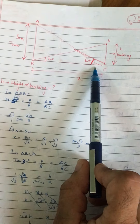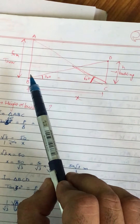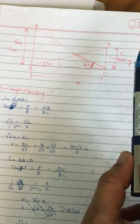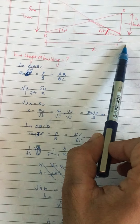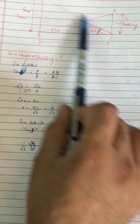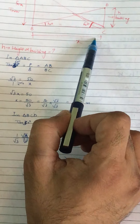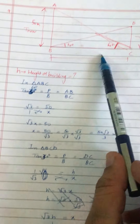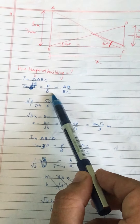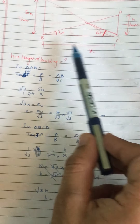Tower bada hai — because the angle of elevation of the top of the tower from the building's foot is 60 degrees, and the top of the building from the tower's foot is 30 degrees. So the tower is bigger. We have not assumed the height of the building yet; I have taken small x as BC. In triangle ABC, we will put tan60° which is perpendicular upon base — perpendicular is AB and base is BC.